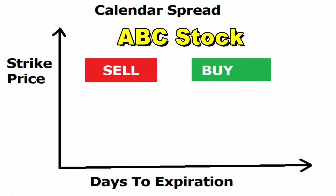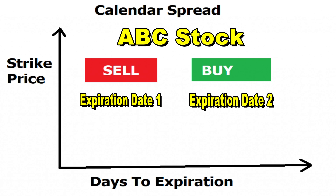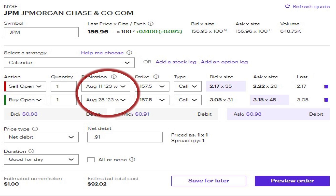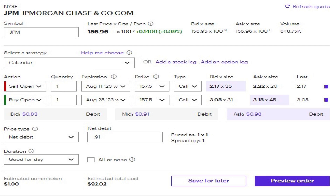So how does a calendar spread work? To create a calendar spread, you choose an options contract with a particular strike price and sell it, while simultaneously buying an options contract with the same strike price but at a later expiration date. The key is the difference in expiration dates between the two options. The option with the longer expiration date is known as the long leg, and the option with the shorter expiration date is known as the short leg. When setting up the calendar spread, the long leg typically costs more than the short leg due to the extra time value.